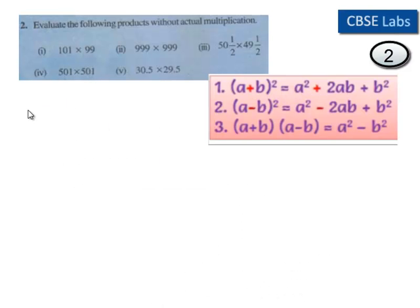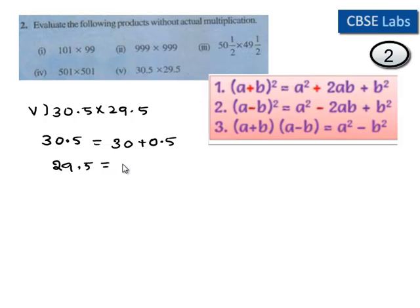Moving on to the 5th bit which is 30.5 times 29.5. The 30.5 can be written as 30 plus 0.5 and 29.5 can be written as 30 minus 0.5.